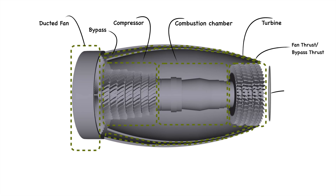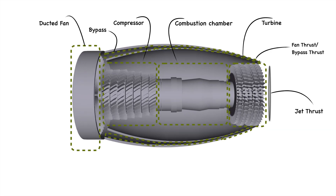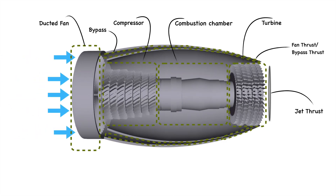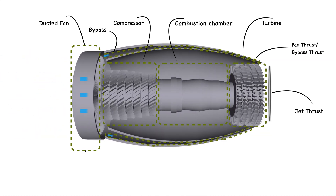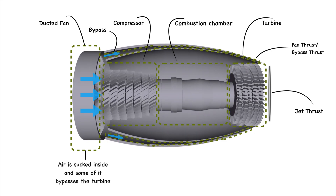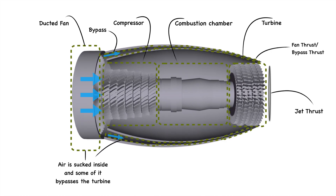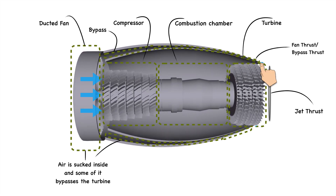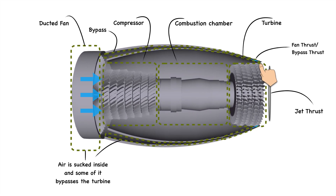Towards the end we have nozzles — one big nozzle in the middle which produces jet thrust, while the fan or bypass thrust is produced with the help of the bypass, and this is the key feature of the turbofan engine. When the air is sucked in by the ducted fan, some of it bypasses the turbine, and that bypass air produces a small jet which can be called fan thrust.